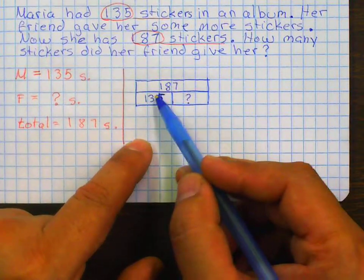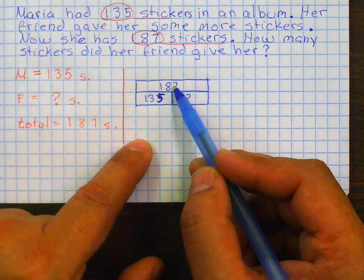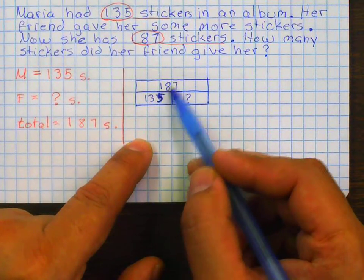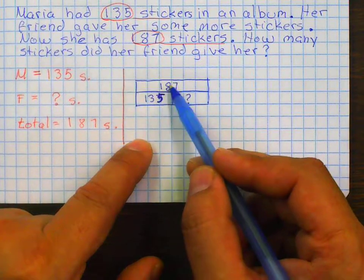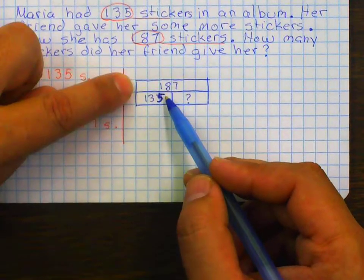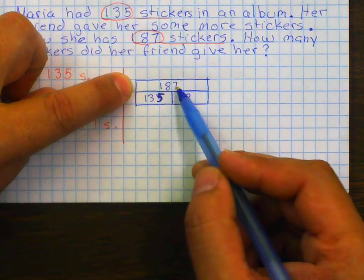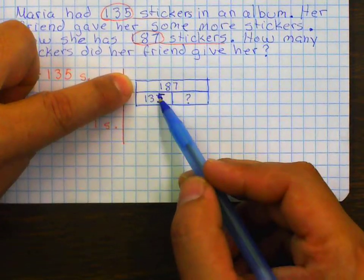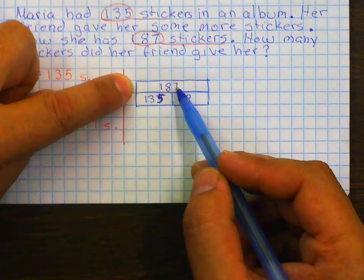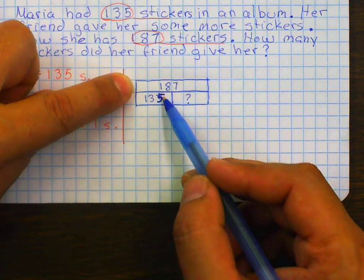Look at the next question. Can I add 135 plus 187? No. Why not? Because 187 is more than 135. Okay. This one is more than 135, but I can still add those two numbers. In this case, why I cannot add 187 plus 135?